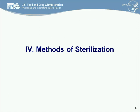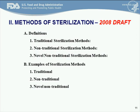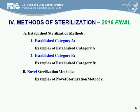Moving on to methods of sterilization, you may recognize these methods from earlier versions of the guidance document: traditional sterilization methods, nontraditional sterilization methods, and novel nontraditional sterilization methods. In the 2016 final version, the nomenclature has changed. Now we're looking at established category A, established category B, and novel sterilization methods, with examples of each sterilization method integrated into each section.